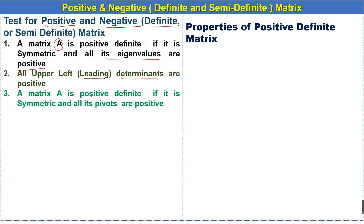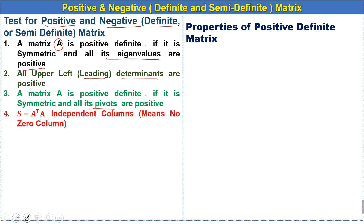The third test: a matrix A is positive definite if it is symmetric and all its pivots are positive. This means that when we do elimination, if all the diagonal elements are positive, then the given matrix is positive definite. We will also solve an example related to this test.